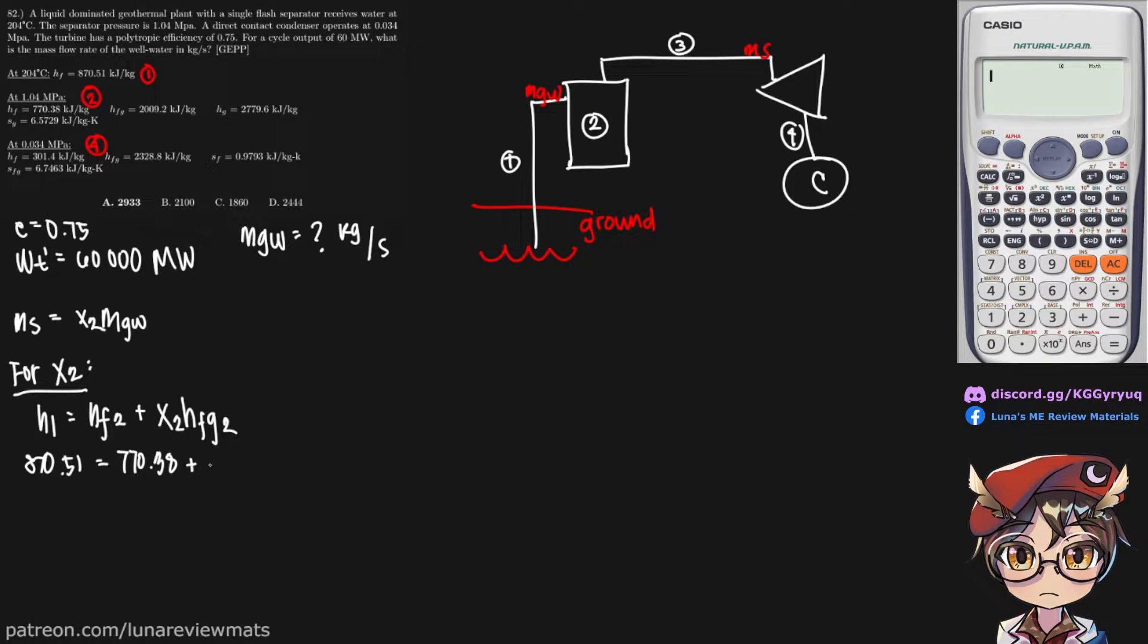And we're trying to find X sub 2. H_FG is 2009.2. So our X sub 2 would be... Let's put that in our calculator.